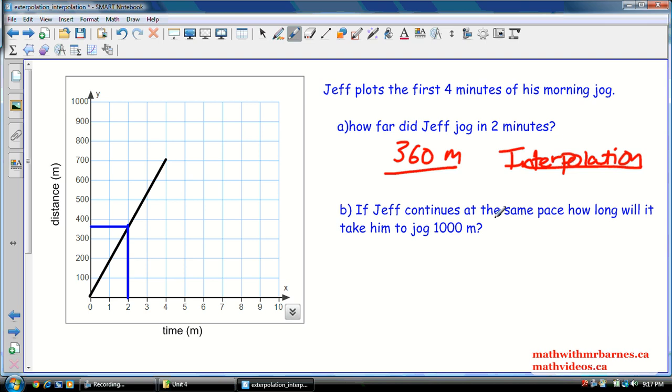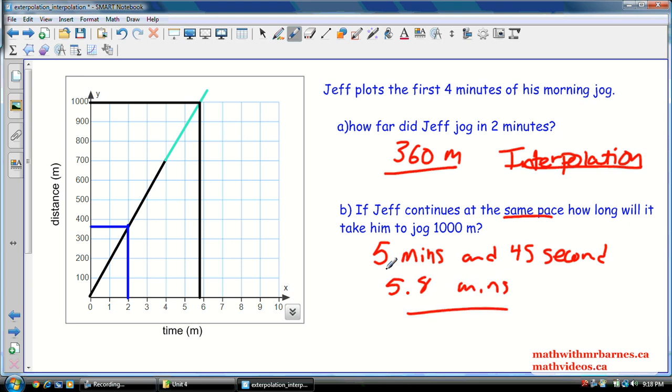Now, if Jeff continues at the same pace, so we're assuming that he's going to continue jogging now. In reality, he probably wouldn't be able to continue at the same pace. How long would it take Jeff to jog 1,000 meters? So, let's extend our graph a little bit. So, I'll extend it this far. Maybe make it a different color so you guys can see what I extended there. So, 1,000 meters. So, we're starting on the Y-axis this time, because we know he jogged 1,000 meters. So, 1,000 meters. And I'm going to go straight down over here. And if you look there, it's going to take him just short of 6 minutes. So, maybe we can say it's going to take him 5 minutes and 45 seconds. Or if you wanted to say it's going to take him 5.8 minutes or some estimate somewhere along the lines of that.